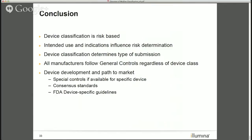In conclusion: device classification is risk-based. Intended use and indications — the words you choose — can definitely influence the risk determination. Device class determines the submission type: exempt, 510K, or premarket approval application. All devices follow general controls regardless of class. And there are many tools to help you on your development path: special controls for specific device categories, consensus standards, and FDA-specific guidance documents that can be device-specific or generic.